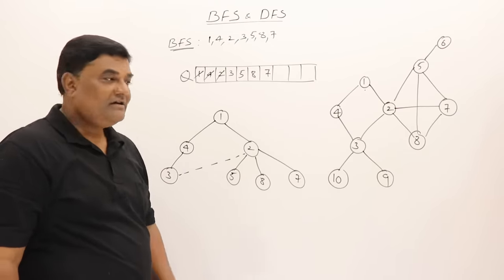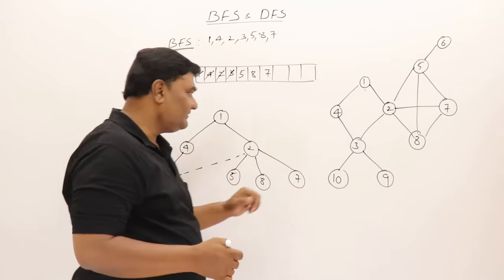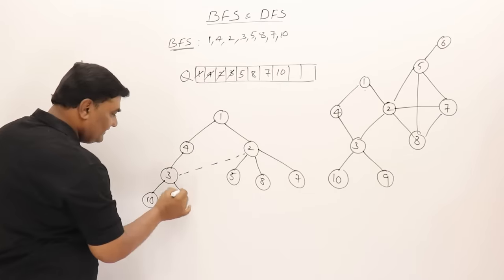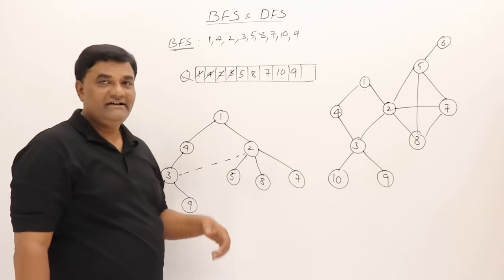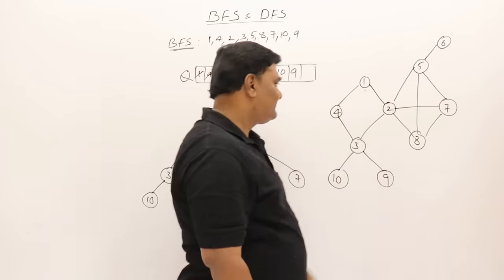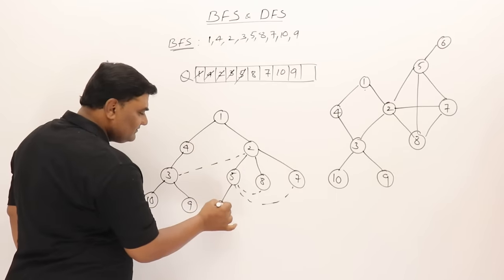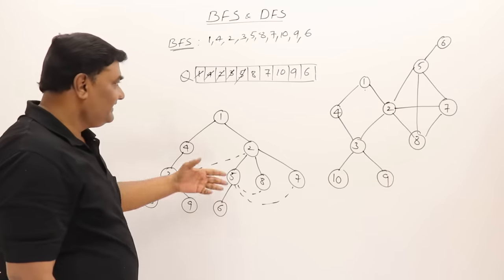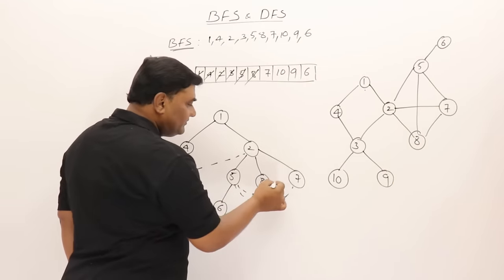Vertex 2 is completely explored. Next vertex for exploration is 3. Adjacent to 3 are 2, 8, 9, and 10. Two is already visited, so take 10, add it, then take 9, add it to queue. Vertex 3 is completely explored. Next is 5 — adjacent to 5 are 8, 7, and 6. Eight and 7 are already visited. Visit 6, add it. Next is 8 — adjacent are 2 and 7, both already visited, so draw dotted lines.